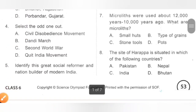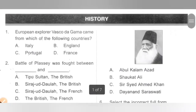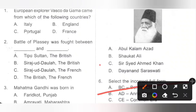Question 5: Identify this great social reformer and nation builder of modern India. The person shown in the picture is Sir Syed Ahmed Khan. He founded the famous Aligarh Muslim University in 1875. Option C is the correct answer.